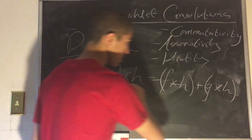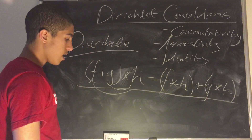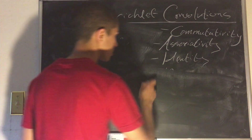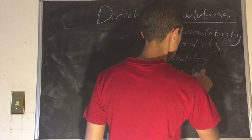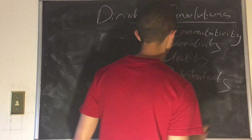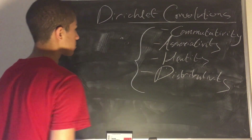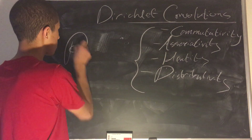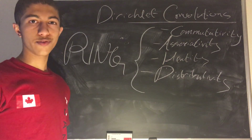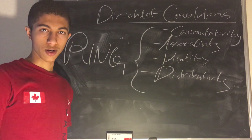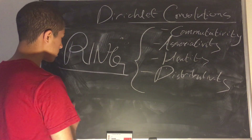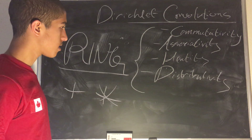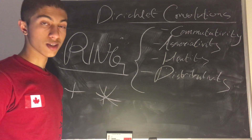This is another property which holds true. Over the operations of addition and Dirichlet convolution, these form a ring. If you are not familiar with what a ring is, you can brush up on your abstract algebra or group theory. This concludes the first segment on Dirichlet convolutions. Thank you very much.